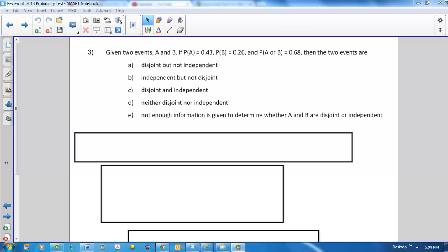Our choices are: disjoint but not independent, independent but not disjoint, disjoint and independent, neither disjoint nor independent, and not enough information is given to determine whether A and B are disjoint or independent.